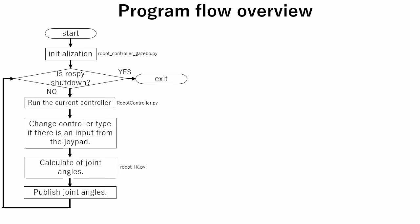Here is the rough program flow. In initialization state, robot dimensions and controller initializations are done. Here we also subscribe to joypad and IMU topics and set publishers for each leg joint.